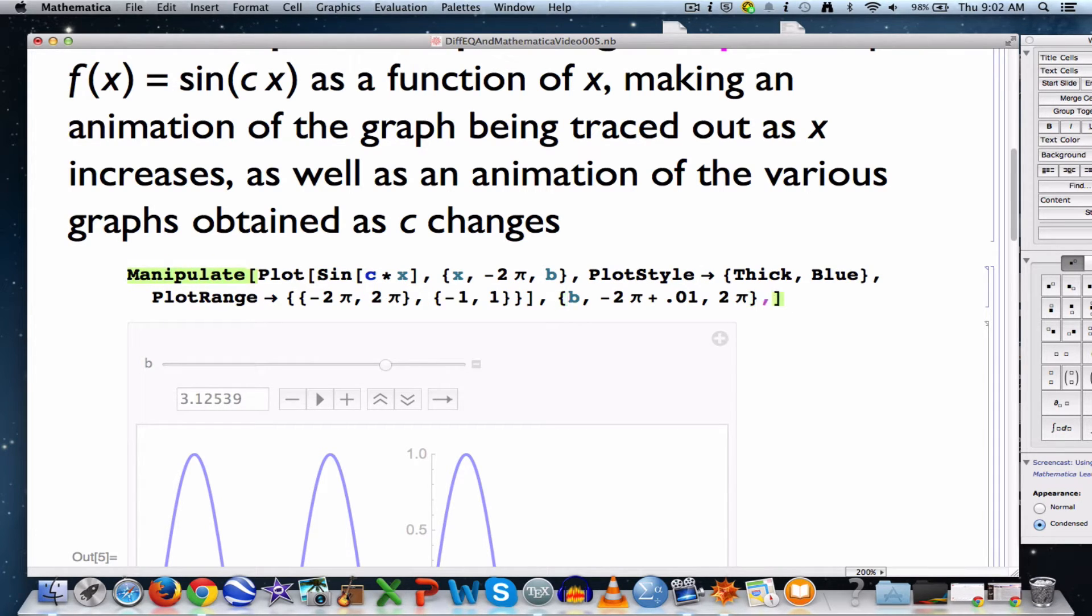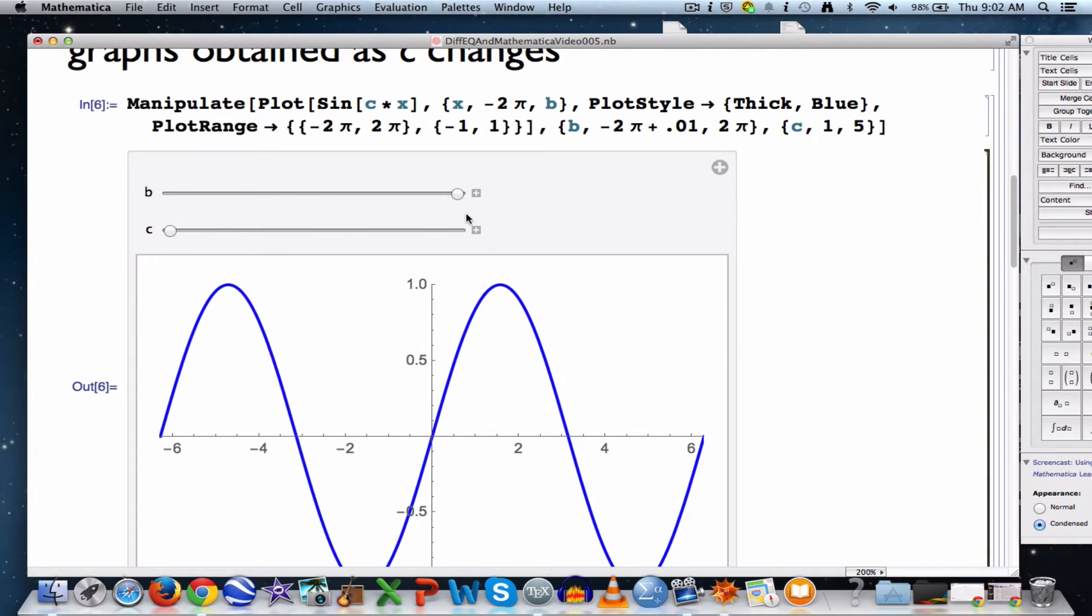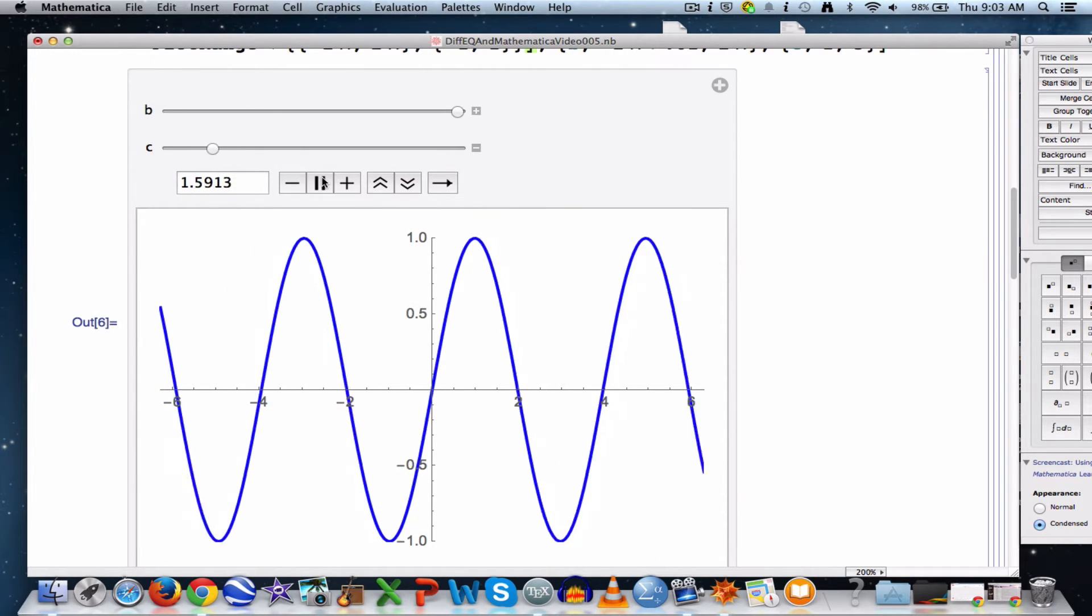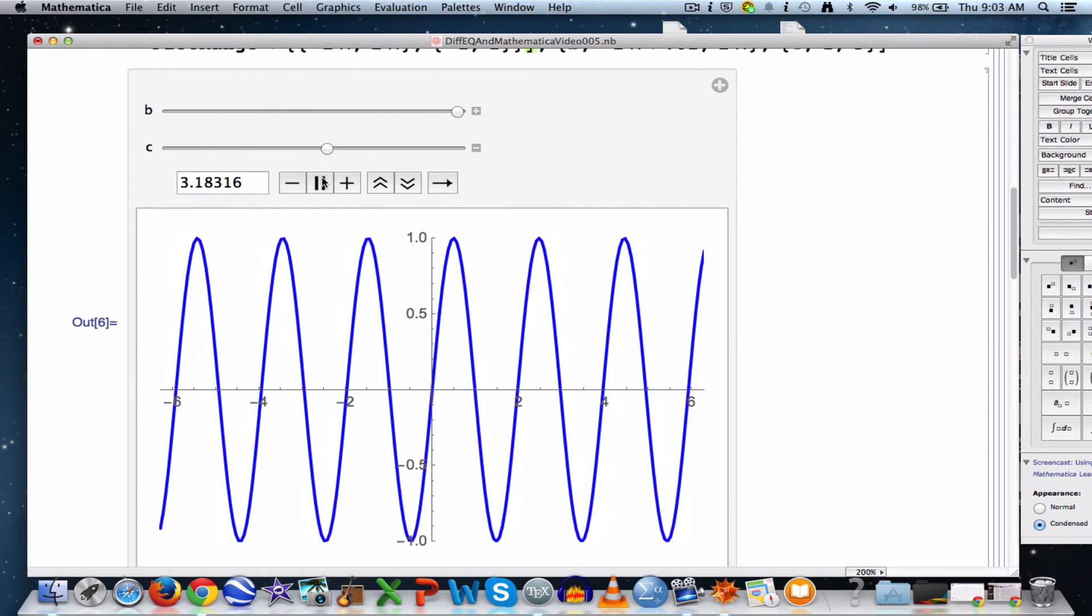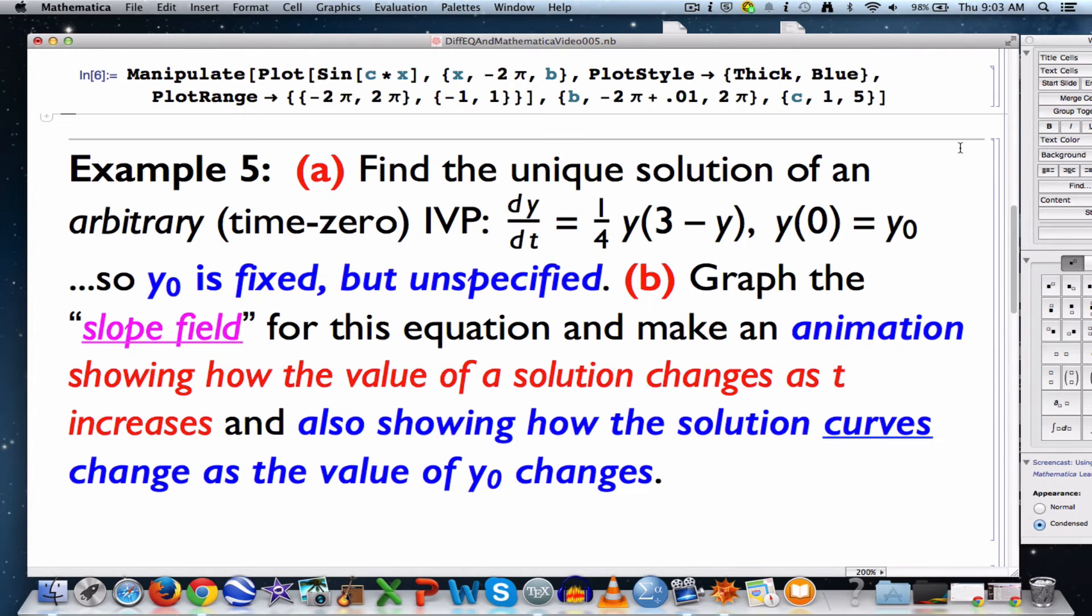You should take a moment to think about what will happen here. What happens as the value of c changes? c is starting out at 1. As c increases, it's c times x in the argument of the sine function, that's going to correspond to a horizontal compression as c increases. And that is the new thing here. We want to do something similar now with our main example.